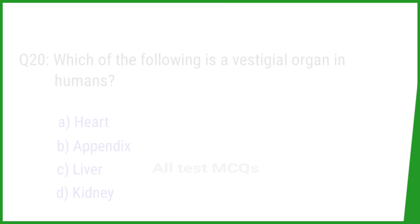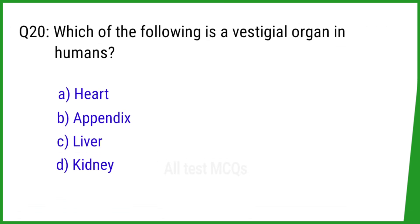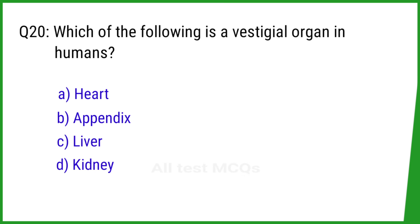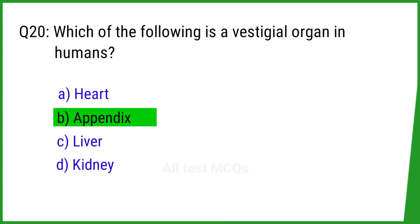Question number 20. Which of the following is a vestigial organ in humans? The correct answer is option B: Appendix.